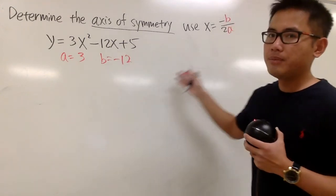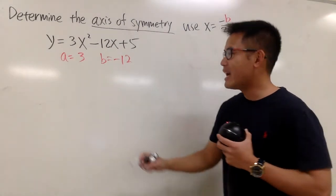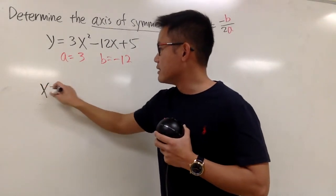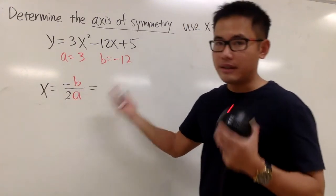And c doesn't really matter because I just have to find the x value for this. It's just that vertical line. Now, I will just say x is equal to negative b over 2a, and then we plug in the numbers.